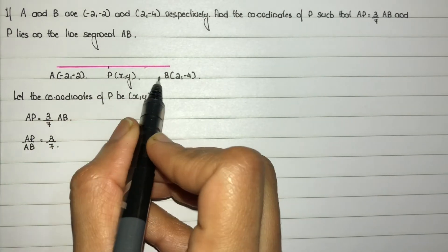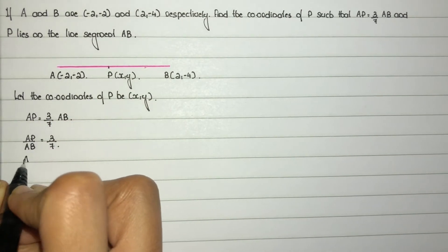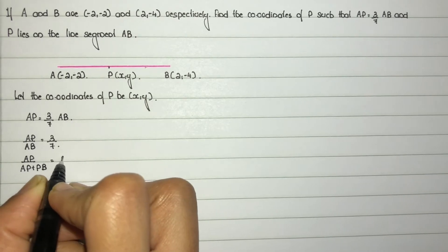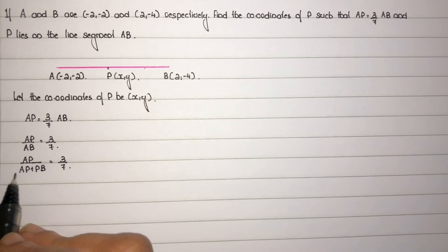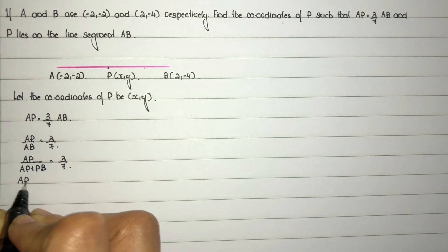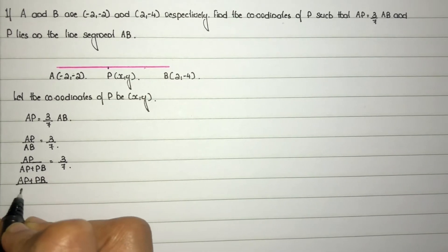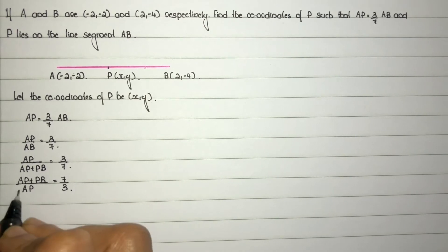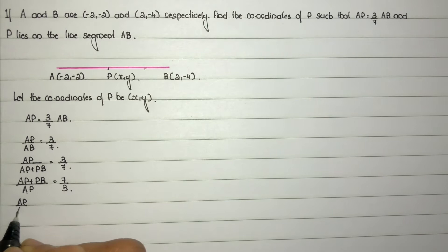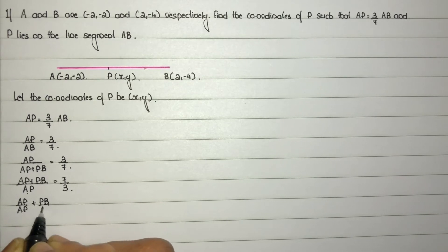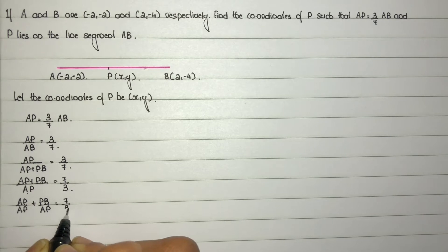Next step: since AB equals AP plus PB, we have AP divided by (AP plus PB) is equal to 3/7. Taking the reciprocal, (AP plus PB) divided by AP equals 7/3. Splitting the fraction: 1 plus PB/AP equals 7/3.